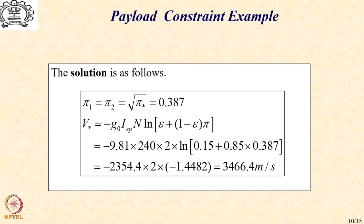There is an important trade-off to note here: if you want a higher π* you must accept a lower velocity, or if you want a higher velocity you must accept a lower π*.